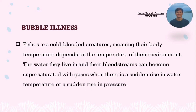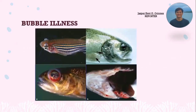Fish are cold-blooded creatures, meaning their body temperature depends on the temperature of their environment. The water they live in and their bloodstreams can become supersaturated with gases when there is a sudden rise in water temperature or a sudden rise in pressure. In the example picture, you can observe bubbles in the eyes, gills, and jaw of the fish.